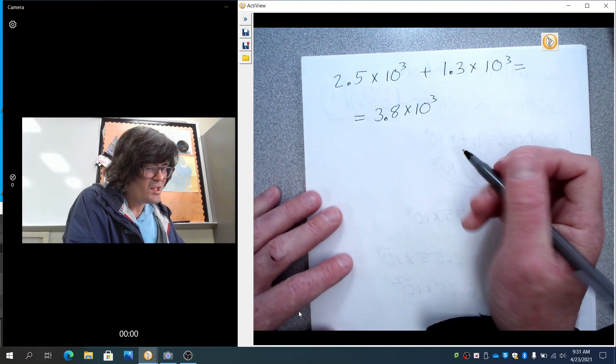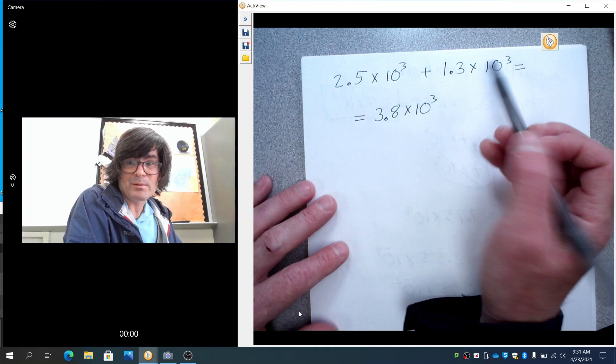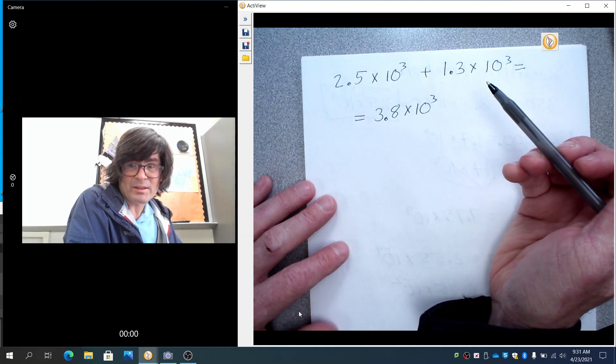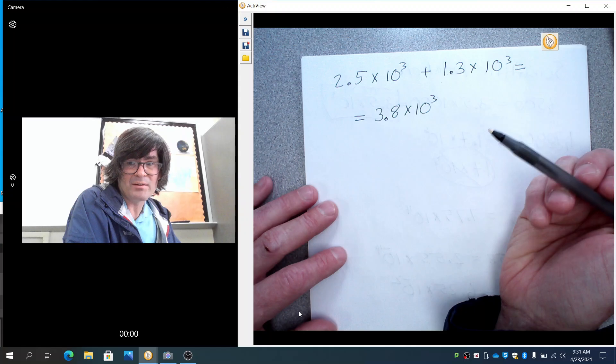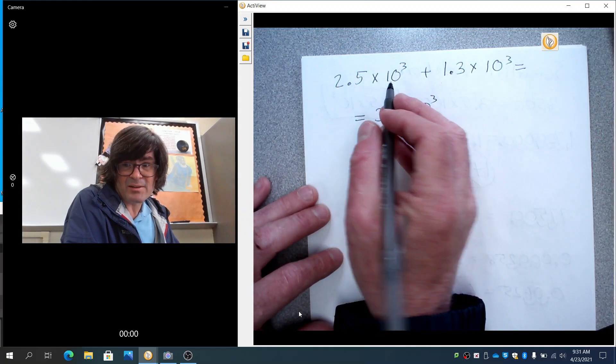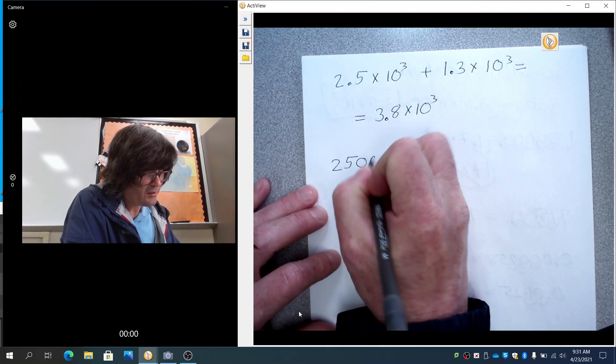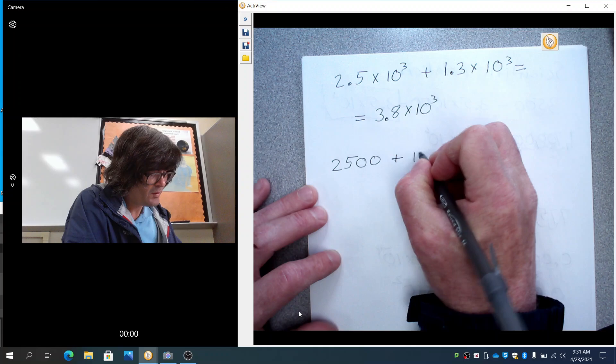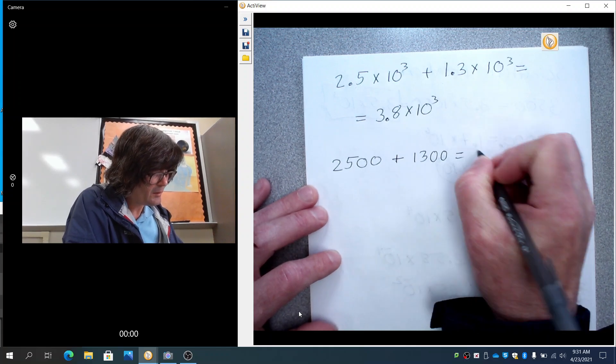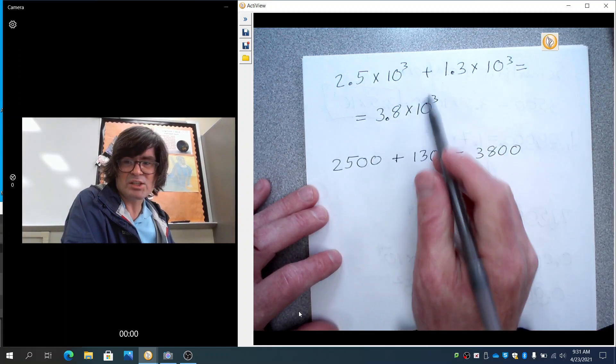And that's it. If this was 10 to the fourth and that was 10 to the seventh, you could not add them in scientific notation form, at least. You'd have to convert them to just a regular number and then add them after that. 10 to the third is 1,000. So this is like saying 2,500 plus 1,300 equals 3,800. So that kind of seems to make sense. Subtraction works the same way.